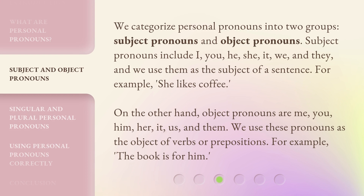We categorize personal pronouns into two groups: subject pronouns and object pronouns. Subject pronouns include I, you, he, she, it, we, and they, and we use them as the subject of a sentence. For example: she likes coffee. On the other hand, object pronouns are me, you, him, her, it, us, and them. We use these pronouns as the object of verbs or prepositions. For example: the book is for him.